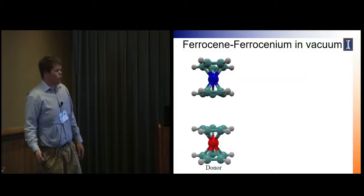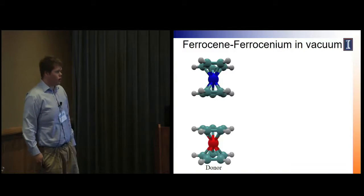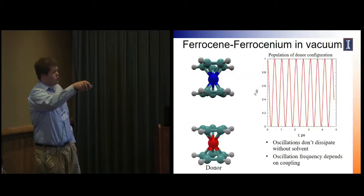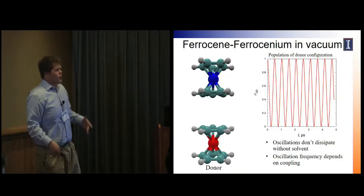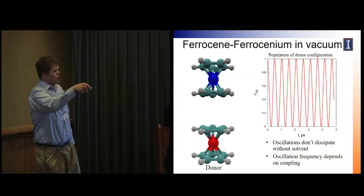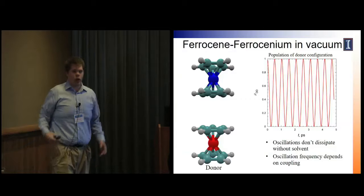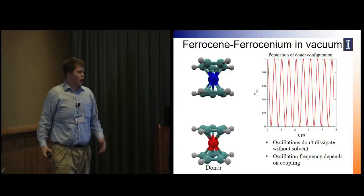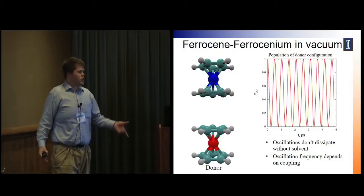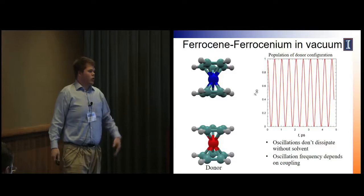If you set this up in the donor configuration and let it evolve over time, it will eventually become the acceptor configuration, and if you keep going, it will return to the donor configuration. This is a plot of the donor population: starting at 100%, you go to zero, go back up, and keep oscillating. These oscillations won't dissipate without coupling to a solvent, and the oscillation frequency is related to the coupling between the donor and acceptor states.